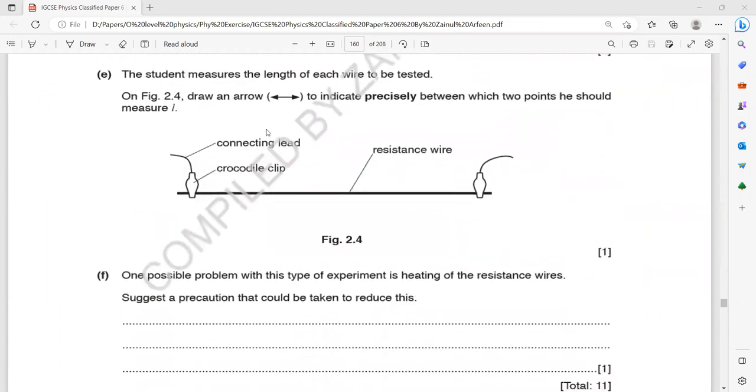Then the student measures the length of each wire to be tested. On the figure, draw an arrow, means two direction arrow, to indicate precisely between the two points that he should measure. Like what is the length he should measure? You can use screen annotation. Like which part he should measure? The length.